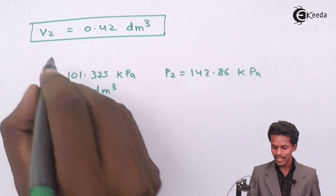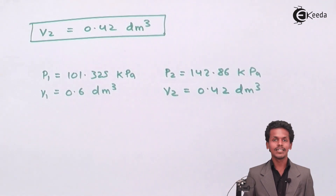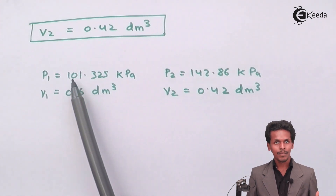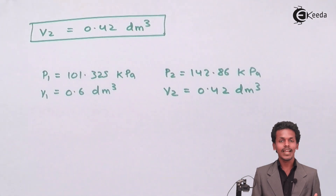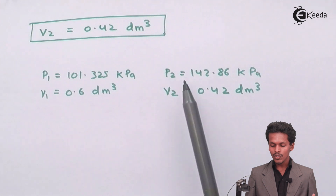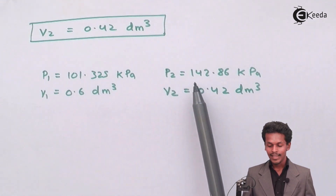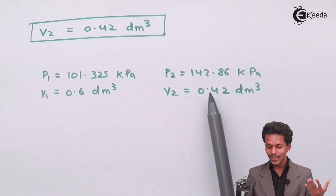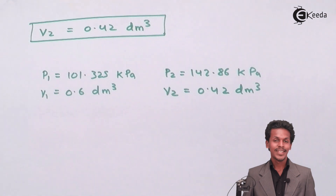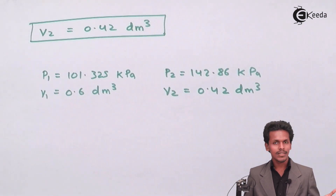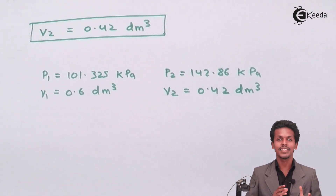What we observe here is that when comparing the two states: if the pressure is less, then the volume will be greater, which indicates that pressure is inversely proportional to volume. Here, 142.86 kPa is greater than 101.325 kPa, so the pressure is more and the volume is less — 0.42 dm³ is less than 0.6 dm³. This clearly confirms that the result follows Boyle's Law: increasing pressure reduces volume.